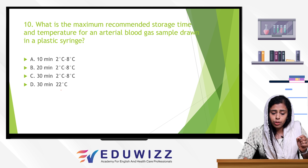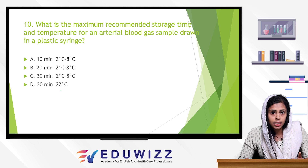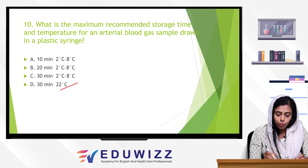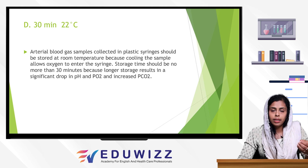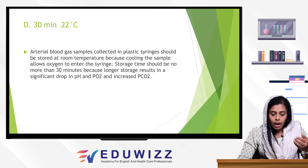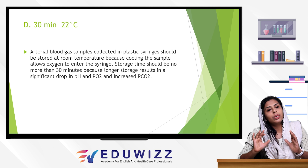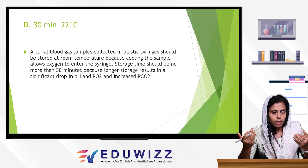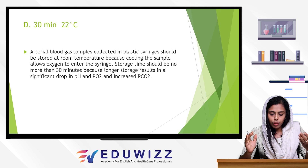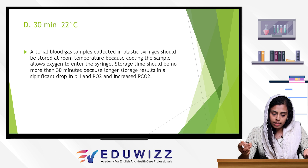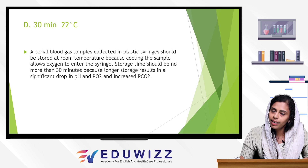Next question: what is the maximum recommended storage time and temperature for an arterial blood gas sample drawn in a plastic syringe? The answer is 30 minutes at room temperature (22°C). If stored longer, oxygen can enter through the plastic syringe, causing pH changes: PO2 increases, PCO2 decreases. So 30 minutes at room temperature is the correct answer.